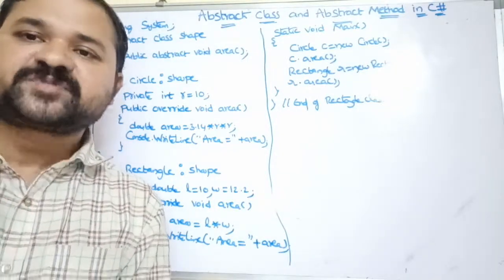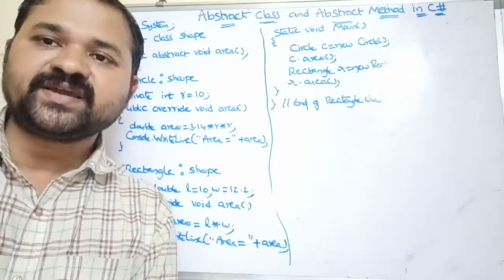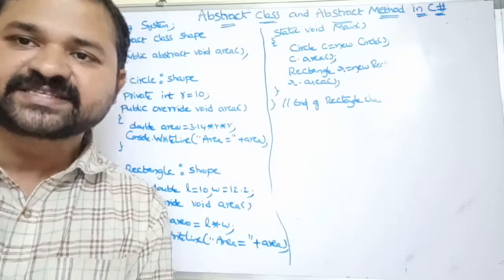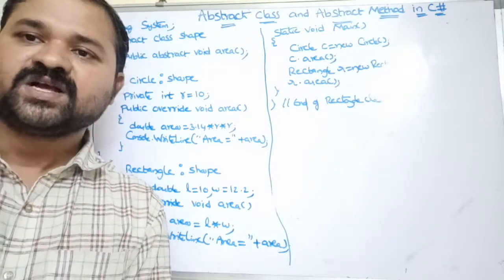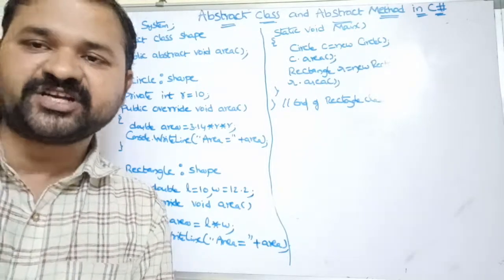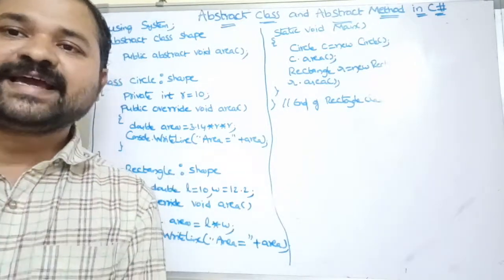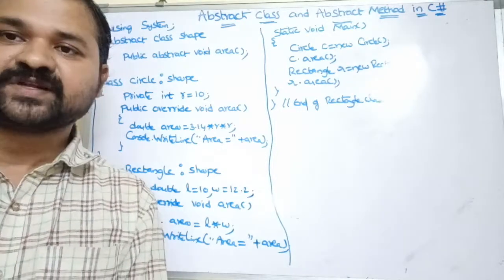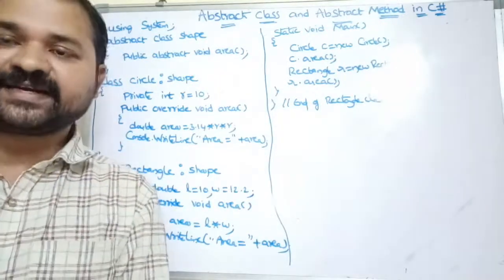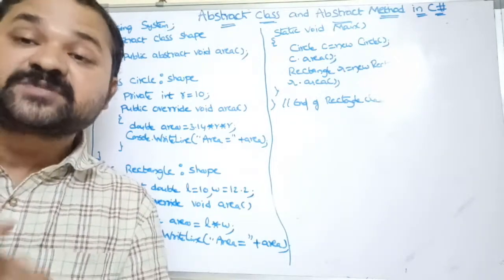Let's see about abstract class and abstract method in C#. First, let's see what is an abstract method. A method without definition is known as an abstract method — that means an abstract method contains only the declaration part, it doesn't contain any definition. If you don't know the full functionality or implementation of a method, then it is declared as an abstract method.